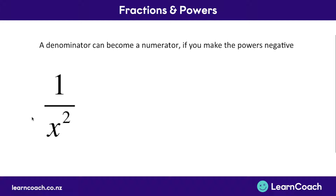So for example here, we've got a denominator — the bottom of a fraction — of x to the power of 2. Now we can make that power negative, so x to the power of negative 2, and then we can make it a numerator, have it on the top of a fraction. In this case there'd be nothing left on the bottom of the fraction, so this would be your final answer.